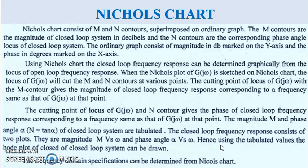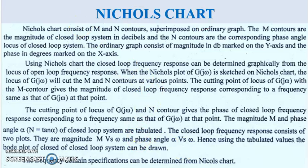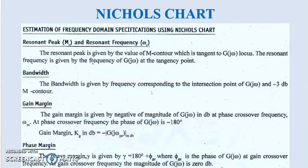The Nichols chart also helps to find out the various frequency domain specifications. These include the Resonant Peak and the Resonant Frequency omega_r. The Resonant Peak is the maximum value of the magnitude of the closed loop frequency function, and the Resonant Frequency is the particular frequency at which the Resonant Peak occurs.